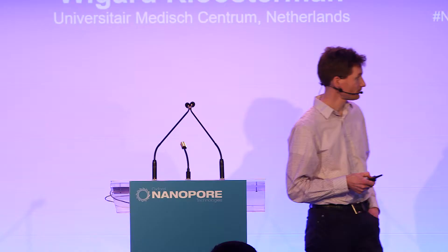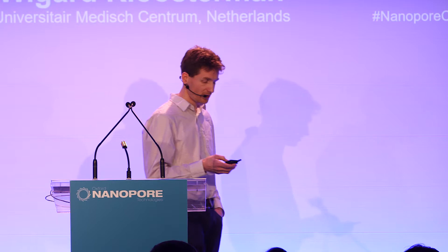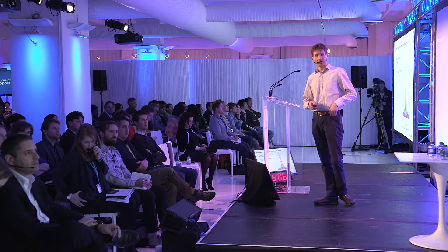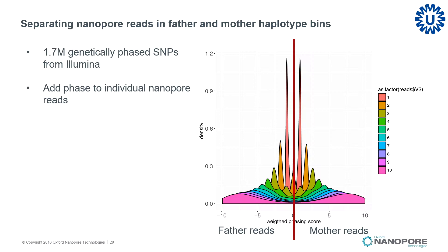Besides structural variation calling, we asked ourselves about phasing of genetic variations, because the long reads of nanopore are of course very suited for this. Can we phase the structural variations that we discovered? We cheated a little bit by also using the Illumina data to start the phasing process — we had the whole trio sequenced: the patient with chromothripsis, the father, and the mother. Using this trio information from the Illumina data, we obtained 1.7 million genetically phased SNPs and used these to phase the nanopore reads — splitting them into father and mother bins.